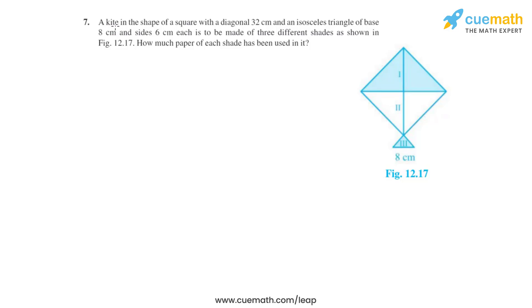Question number seven says that a kite in the shape of a square with diagonal 32 centimeters and an isosceles triangle of base 8 centimeters and sides 6 centimeters each is to be made of three different shades as shown in figure 12.17. We can see that region 1 is the shade blue, region 2 is white, and region 3 is light blue. We have to find how much paper of each shade has been used in it. Let's highlight the three different regions.